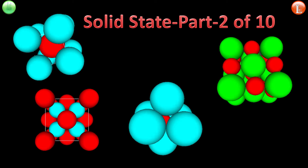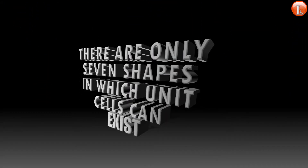Now we are going to do more on unit cells — basically the shapes in which unit cells exist and the way atoms, ions, and molecules are arranged in a particular shape. Based on observation as well as symmetry considerations, it was predicted that there are only seven possible shapes in which unit cells can exist, and till this day we have seen millions of unit cells and none of them violate these rules.